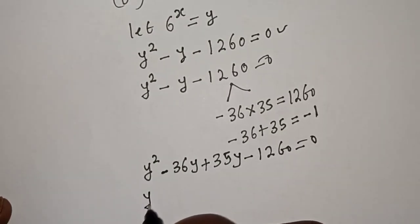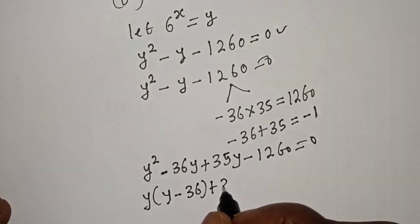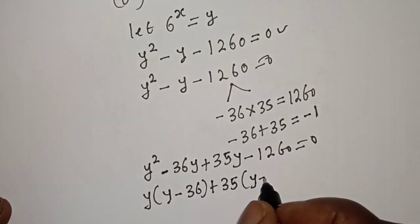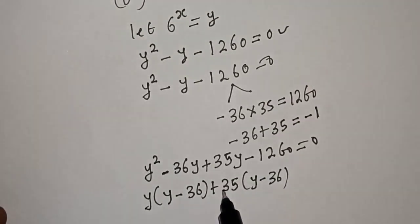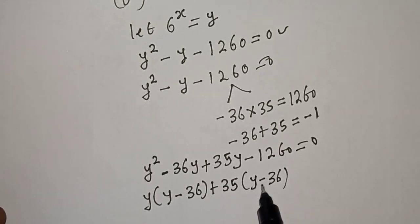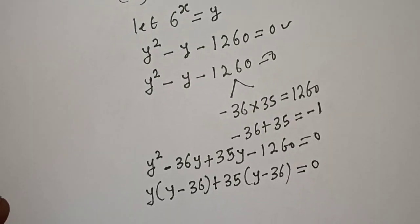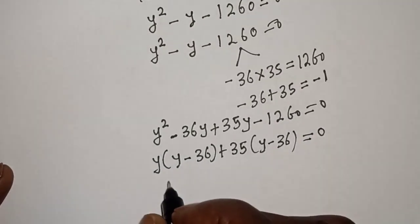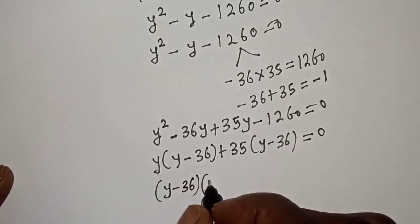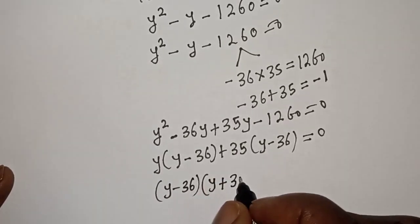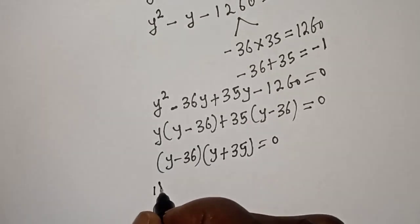Grouping the terms: y is common in the first two terms, giving y(y minus 36), and 35 is common in the last two terms, giving 35(y minus 36). So we have (y minus 36)(y plus 35) is equal to zero.